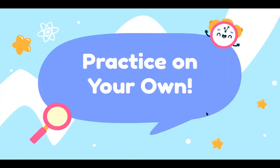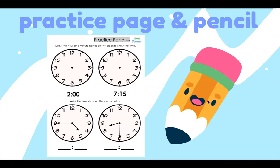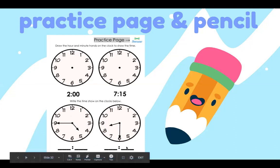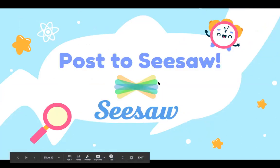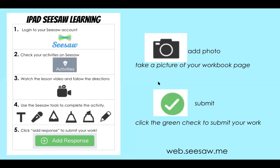Now my second grade friends, I want you to practice on your own. So you are going to flip your page over and it looks like this. You have four clocks. These two clocks, you are going to draw the hour and minute hands on the clock to show the time. You're going to show two o'clock and 7:15. Then on these clocks, you're going to look at where your hour and minute hands are pointing and write in the time below. When you're finished, please post to Seesaw. I can't wait to see all your great work and here's those steps if you don't remember.